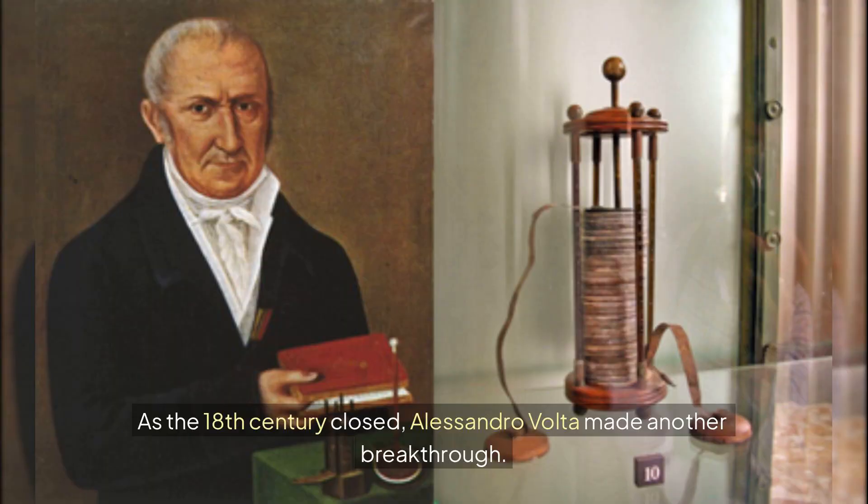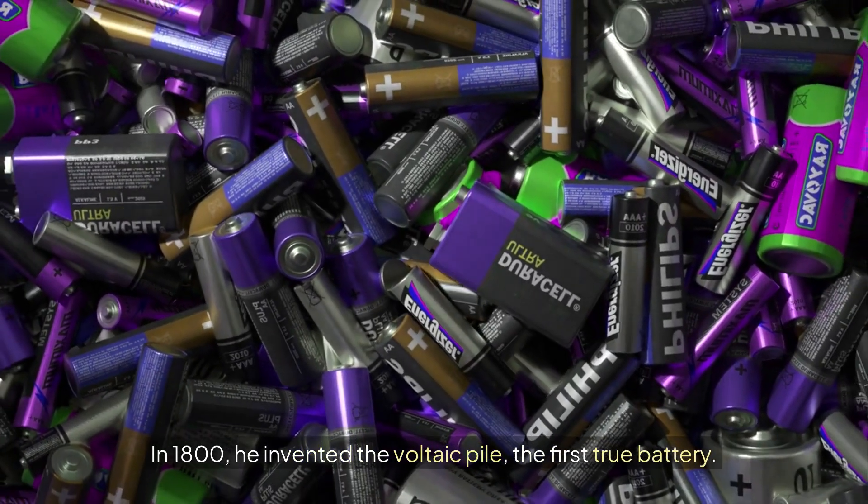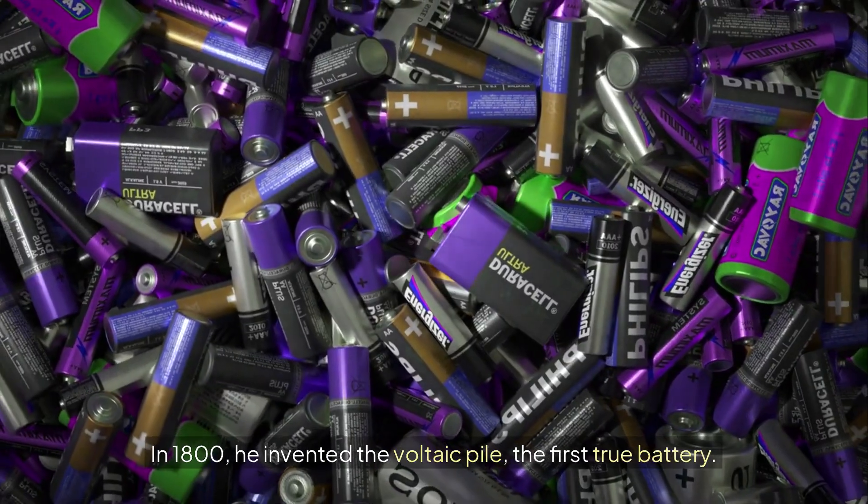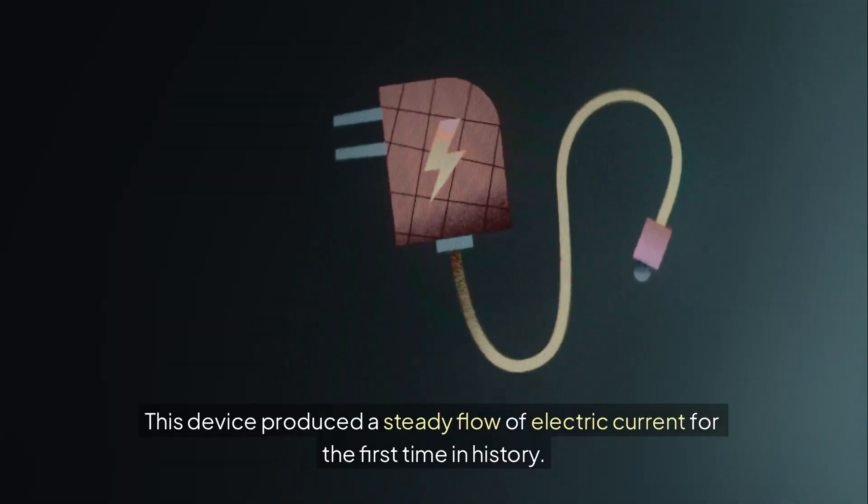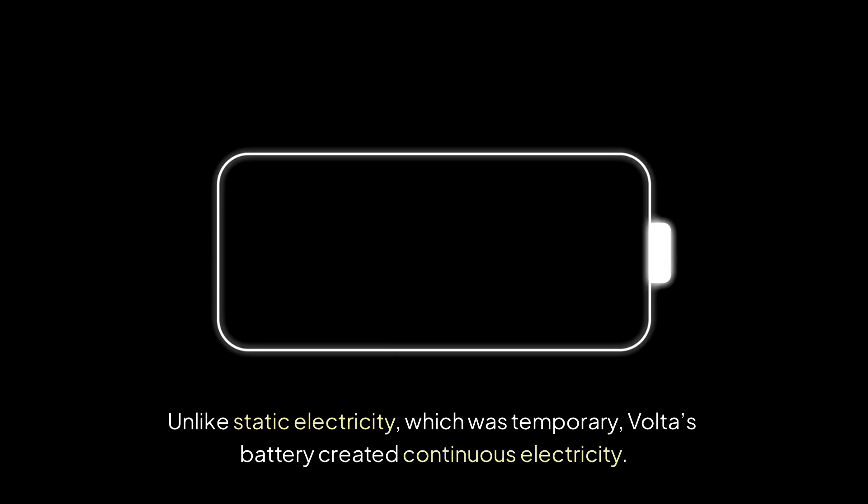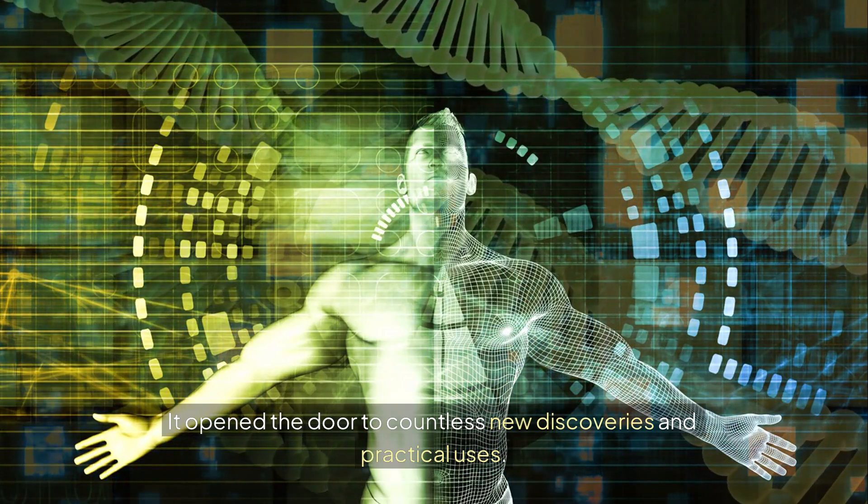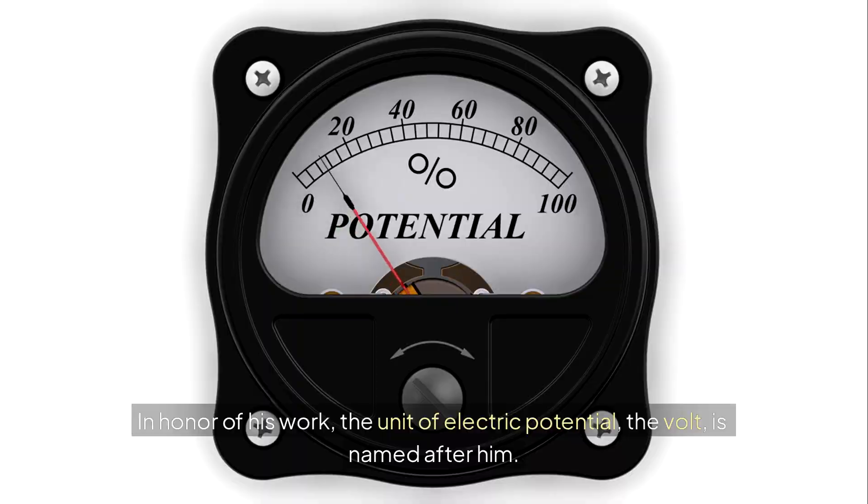As the 18th century closed, Alessandro Volta made another breakthrough. In 1800, he invented the voltaic pile, the first true battery. This device produced a steady flow of electric current for the first time in history. Unlike static electricity, which was temporary, Volta's battery created continuous electricity. It opened the door to countless new discoveries and practical uses. In honor of his work, the unit of electric potential, the Volt, is named after him.